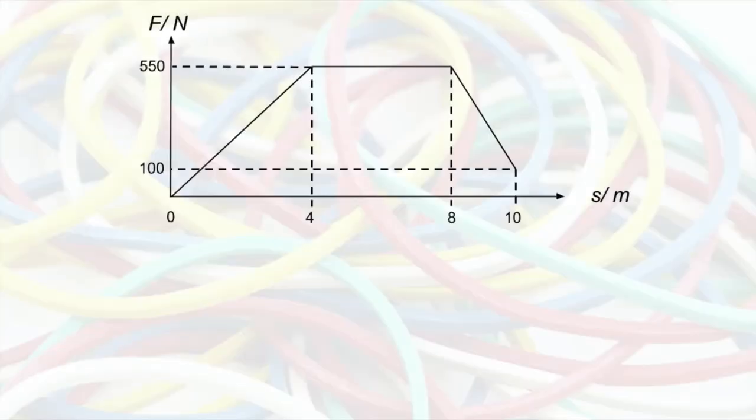Here is an example where the force initially increases and then stays constant before dropping again. To find the work done by the force, we must calculate the area under the graph. We divide it into rectangles and triangles and then calculate each one.